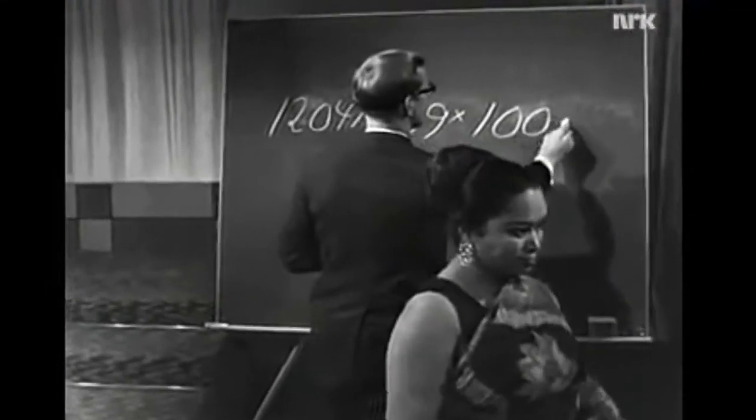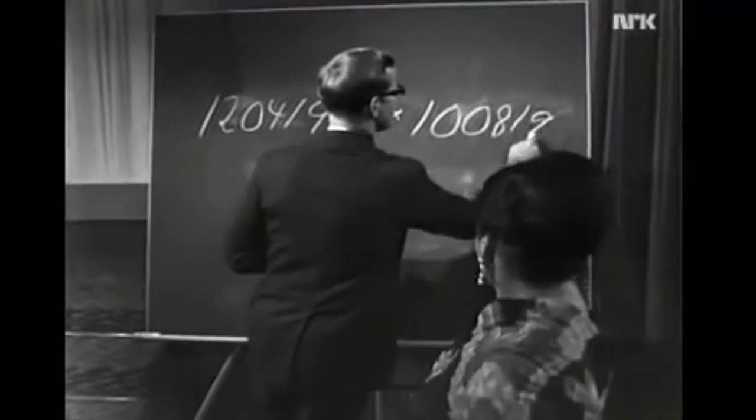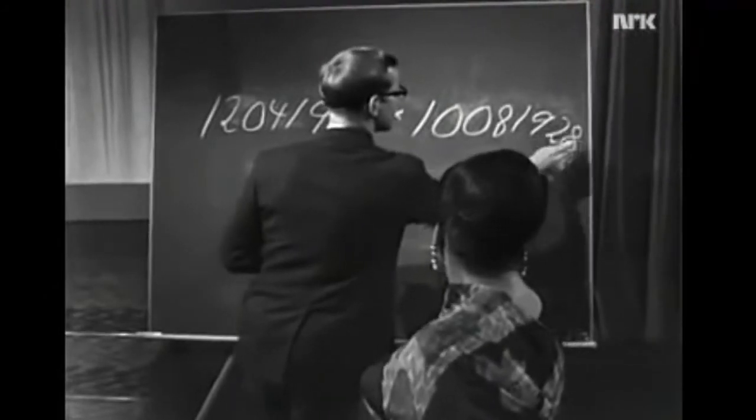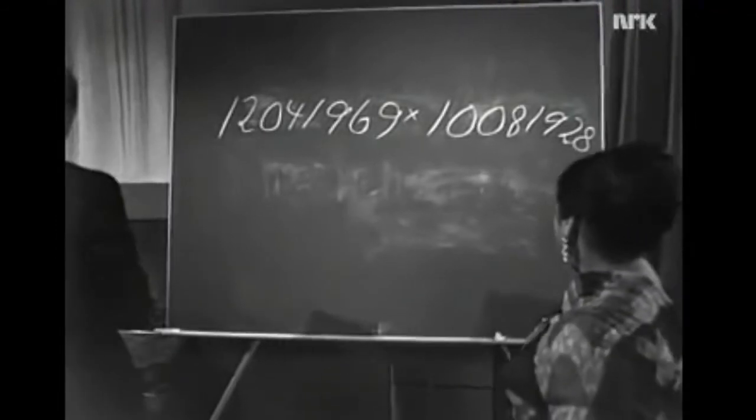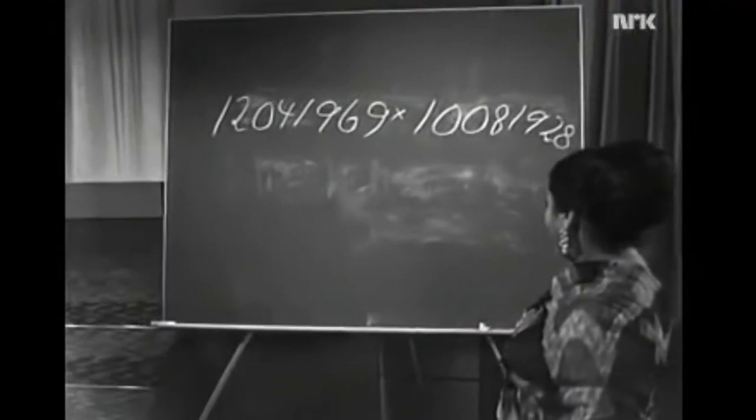The next problem: 12041969 multiplied by 10081928. Here is the answer. 1, 2, 1, 4, 0, 6, 2, 6, 4, 4, 3, 6, 2, 3, 2.